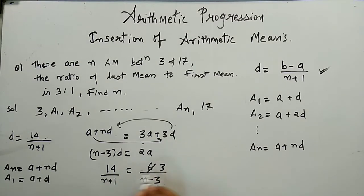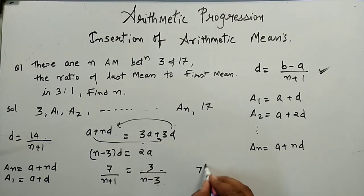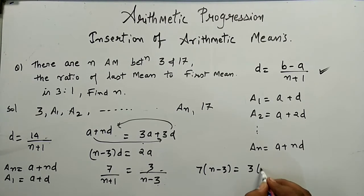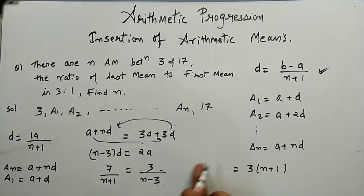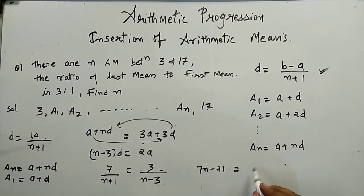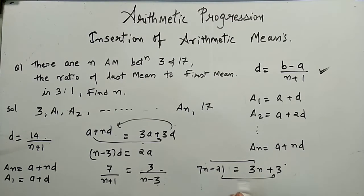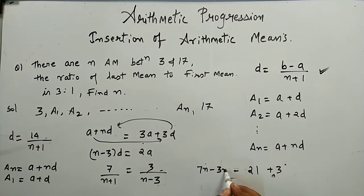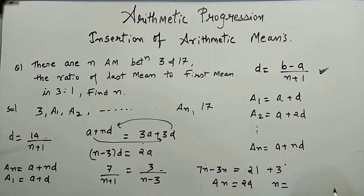Cross-multiplying: 7(n−3) = 3(n+1), which gives 7n − 21 = 3n + 3. Taking 3n to the left and 21 to the right: 4n = 24, so n = 6. Therefore there are 6 arithmetic means between 3 and 17.